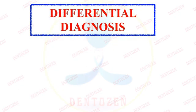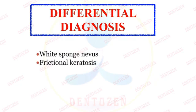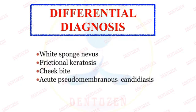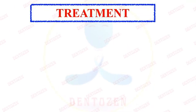Now the differential diagnosis — other diseases that can look similar to leukoplakia include white sponge nevus, frictional keratosis, cheek bite, acute pseudomembranous candidiasis, and lichen planus.